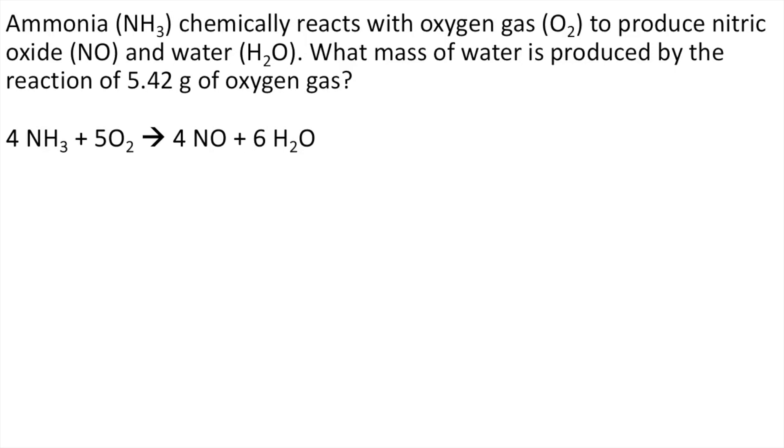Ammonia or NH3 chemically reacts with oxygen gas or O2 to produce nitric oxide or NO and water H2O. What mass of water is produced by the reaction of 5.42 grams of oxygen gas?